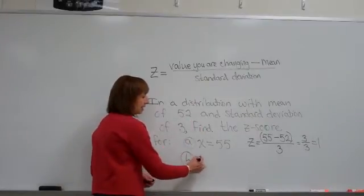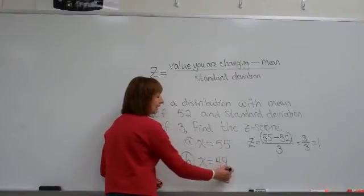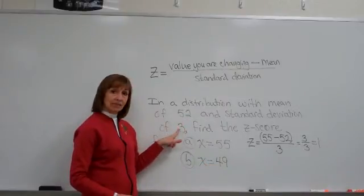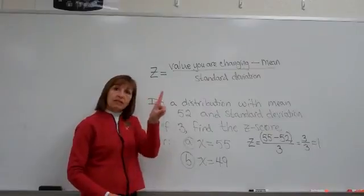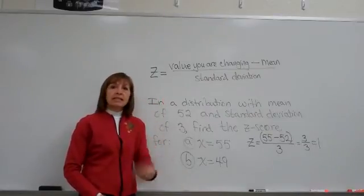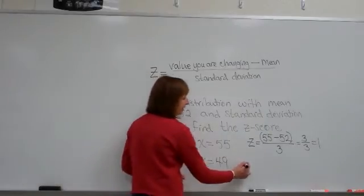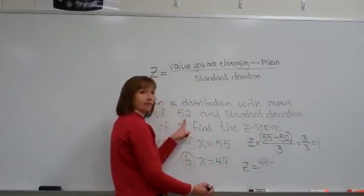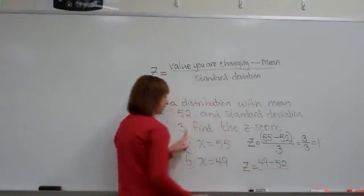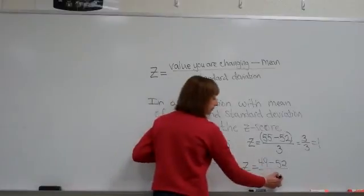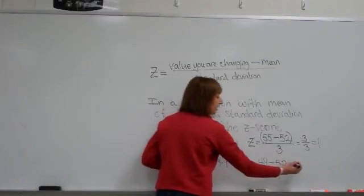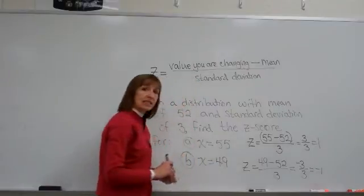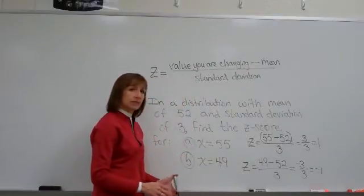Now if we take the raw score of 49 and change it to its z-score: 49 is exactly 3 less than 52, so 49 is one standard deviation lower than the mean, and we anticipate a z-score of negative 1. So z equals 49 minus 52, all divided by 3. Well, 49 subtract 52 is negative 3, and negative 3 divided by 3 gives me negative 1. We do get the values that the z-score is supposed to indicate.